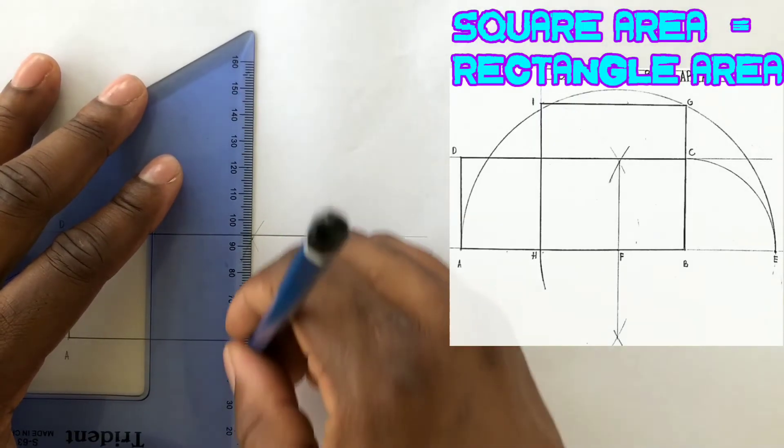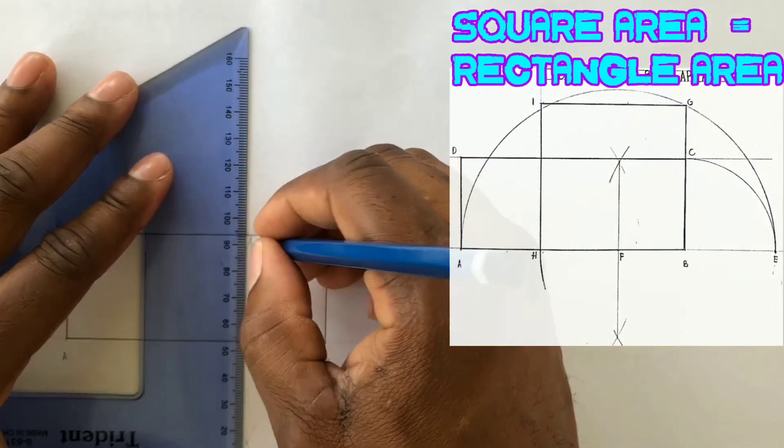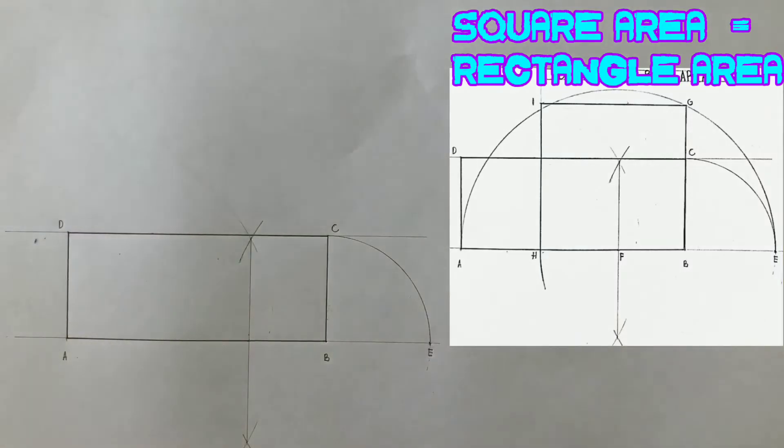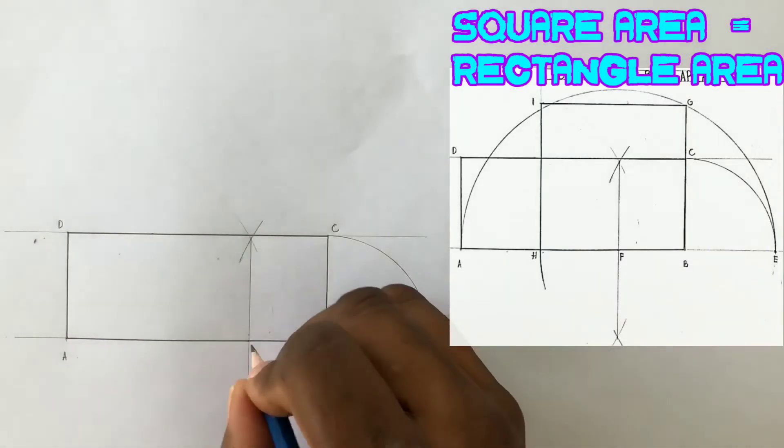Now draw a line to connect the intersection of both sets of arcs. This line will intersect your AB line giving you point F. Label point F.